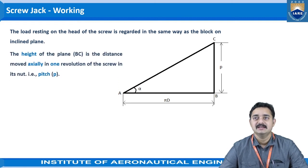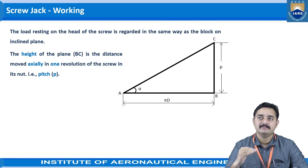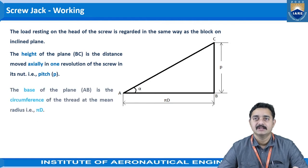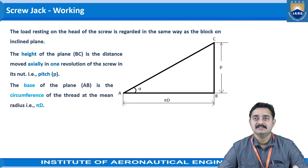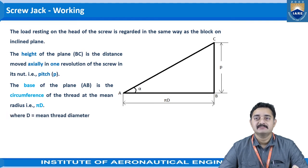The height VC is the distance moved axially in one revolution of the screw in its nut — that is, the pitch. For one revolution of the screw, the height raised or lowered equals the pitch p. The base AB of the plane is the circumference of the thread at the mean radius, that is πd (or 2πr). D is the mean thread diameter. The angle α of the plane is given by: tan α = p / (πd).